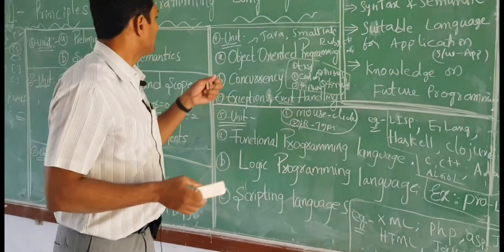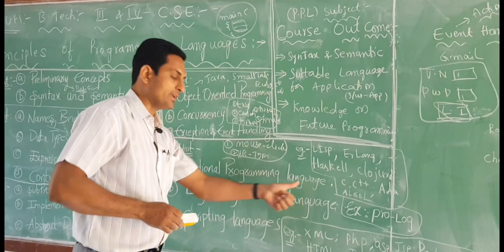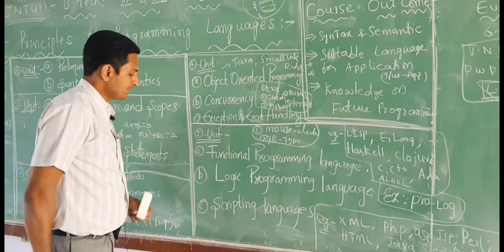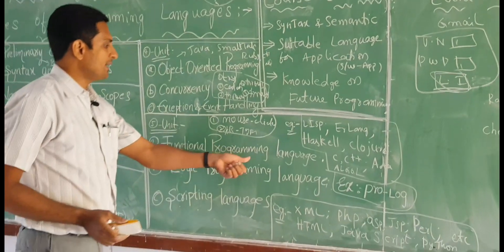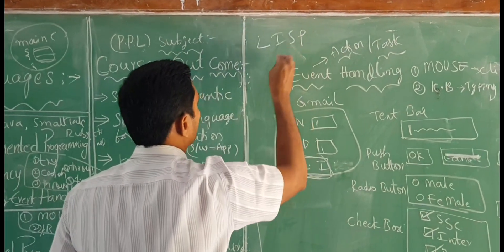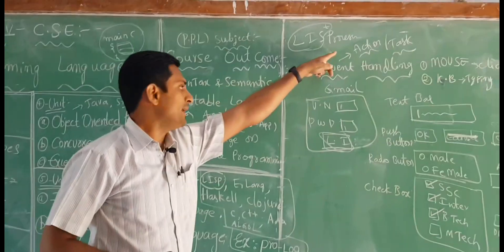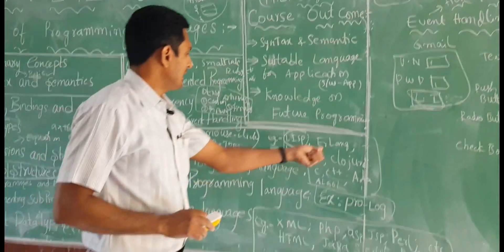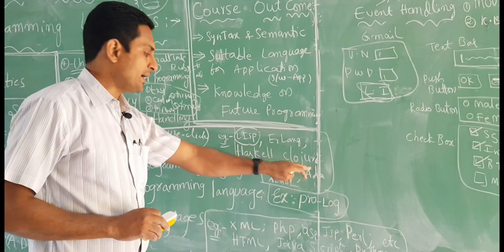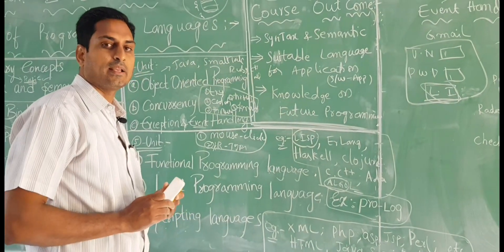Those will be discussed in the fourth unit, last chapter. And fifth unit we have functional programming language, function oriented. For example, printf, scanf, these things will be there. And logic programming language. And lastly we have scripting languages. Functional programming language, some examples are LISP, LISP means list processing language. And we have Erlang, one of the examples of functional programming language, Erlang, Haskell, Clojure, these are new.